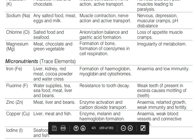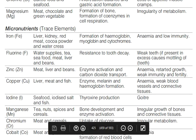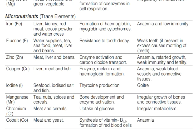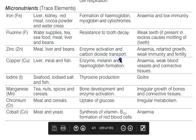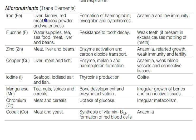Now come to micronutrients, also known as trace elements — used in very small quantities. Iron is found in liver, kidney, meat, cocoa powder, and watercress. It is very important for the formation of hemoglobin, myoglobin, and cytochrome. Deficiency causes anemia and low immunity.